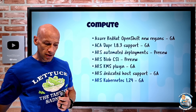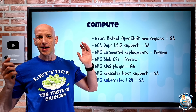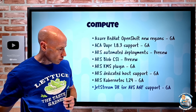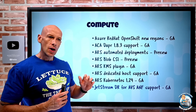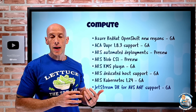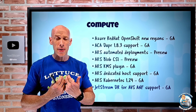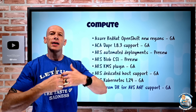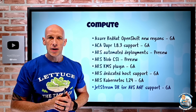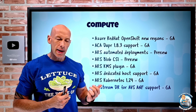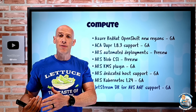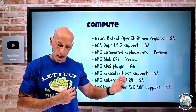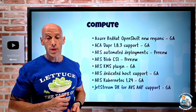AKS Kubernetes 1.24 is now GA — it finally removed the Docker shim, and everything is Container D these days. Also, JetStream DR for the Azure VMware Solution now has Azure NetApp Files support. The Azure VMware Solution runs VMware clusters in Microsoft data centers, letting customers bring existing VMware knowledge and workloads, vMotion them, and manage them with vSphere tools. JetStream DR historically replicated to blob storage, but can now also target Azure NetApp Files as the replication destination.